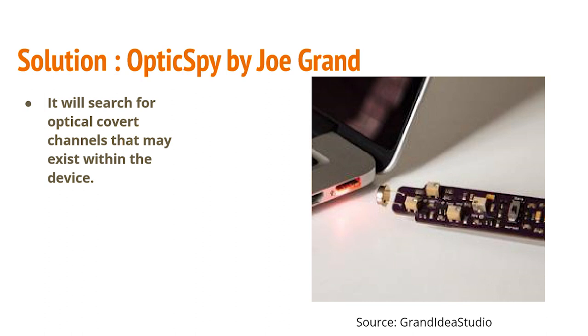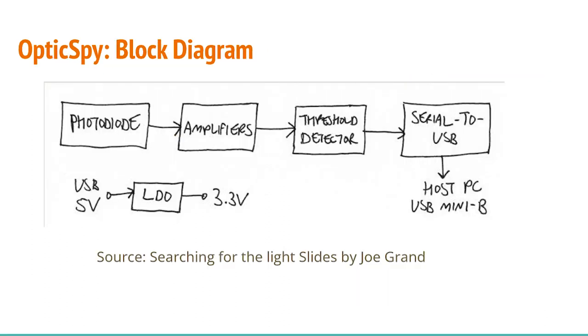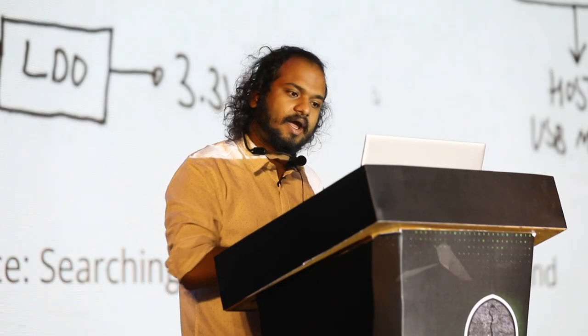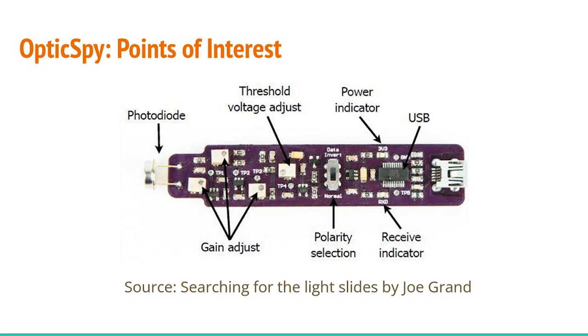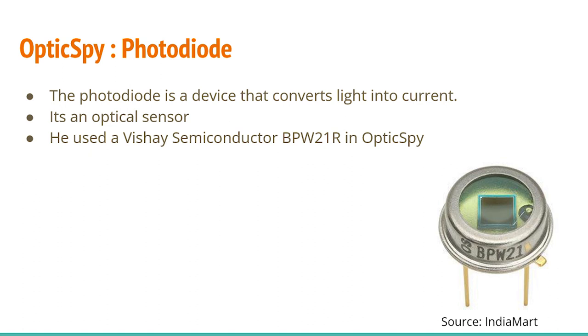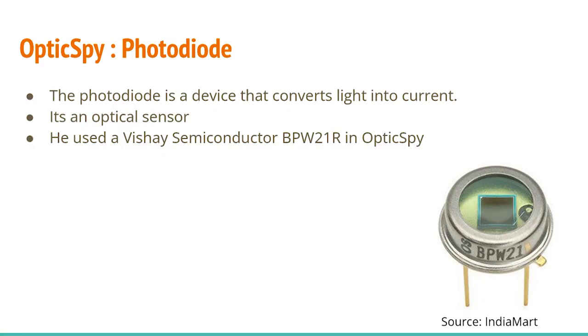Let me explain what OpticsPy is. It has a photodiode, amplifiers, a threshold detector, and a serial-to-USB connector. There's a photodiode, a gain adjust, a threshold voltage adjust, polarity selection, and USB for converting those signals into packet form to read the information. A photodiode is a device that converts light into current - it's an optical sensor. The visual semiconductor used is BPW1R. Let me show you a demo for better understanding.